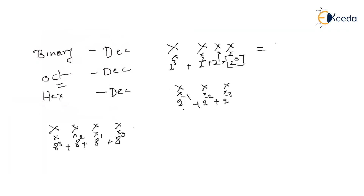For digits after the octal point, the weights are 8^(−1), 8^(−2), 8^(−3). Everything is added to form the result, following the same approach as binary.